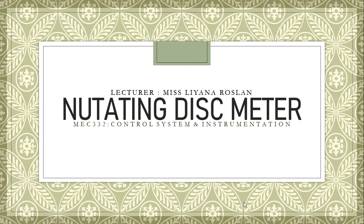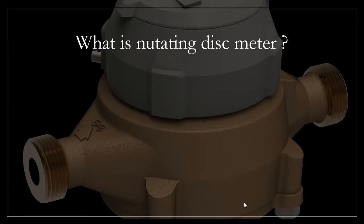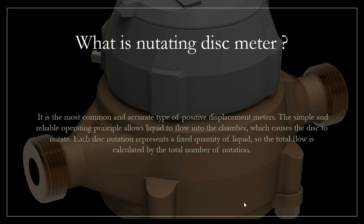Hi, assalamualaikum. Today I will explain one of the measuring instruments, which is the nutating disc meter. First of all, what is a nutating disc meter? It is well known as the most common and accurate type of positive displacement meter. The simple and reliable operating principle allows liquid to flow into the chamber, which causes the disc to nutate.